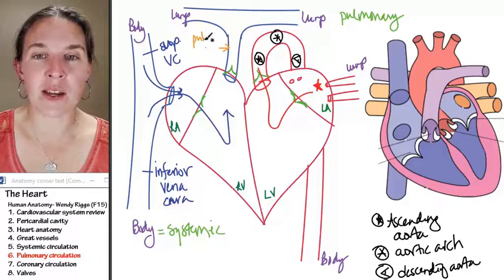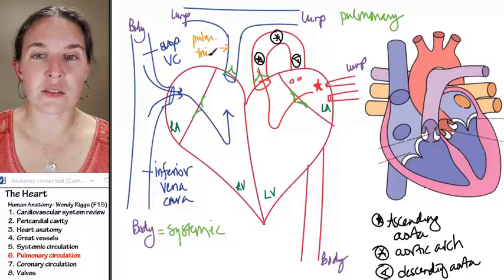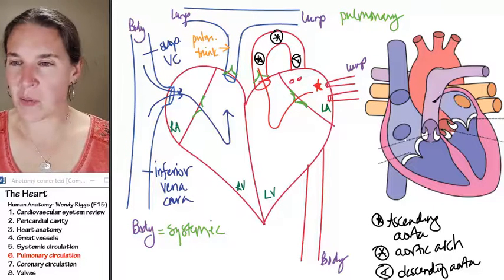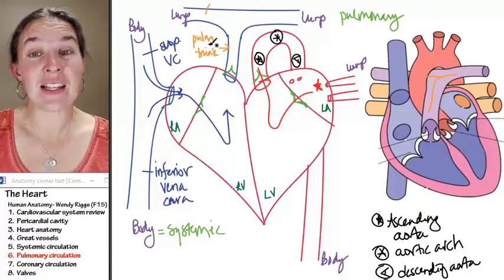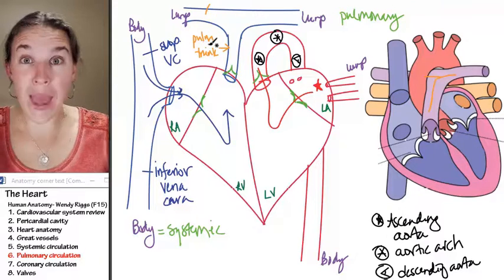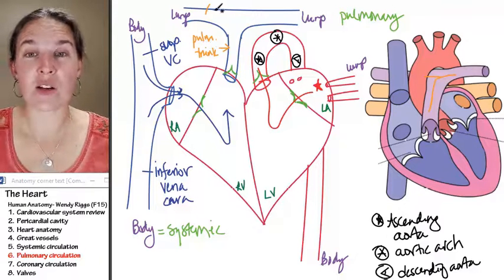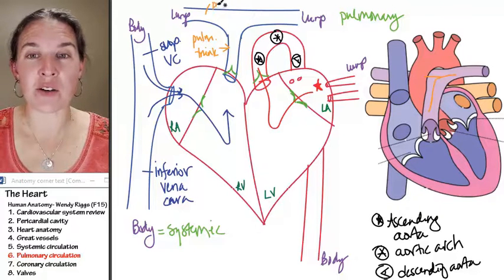So this is my pulmonary trunk. It forms that T. And then these guys are taking blood away from the heart. So these are my right and left pulmonary arteries.